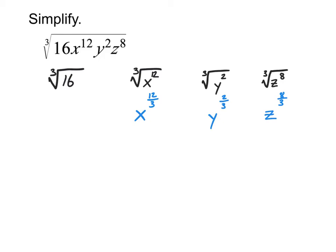And so in order to simplify those with the variables in them, remember this is where we turn them into fractional exponents, and then we simplify from there. So like for the first one, x to the 12 thirds. Well, 12 thirds reduces down to just be four.